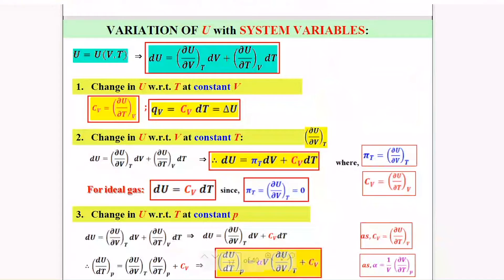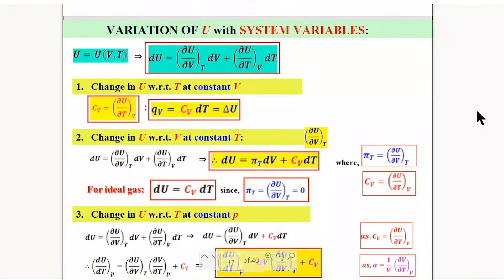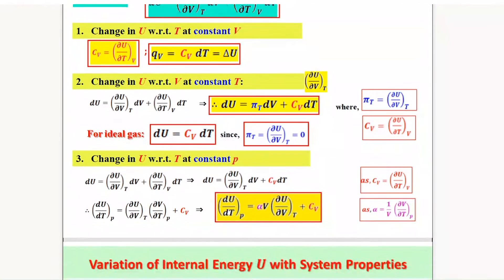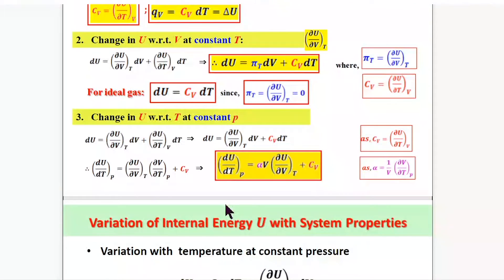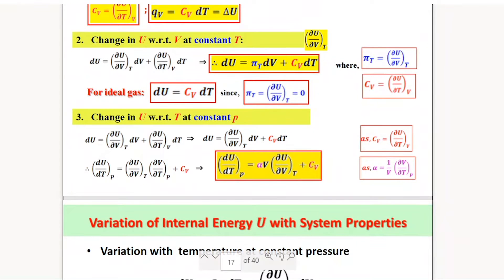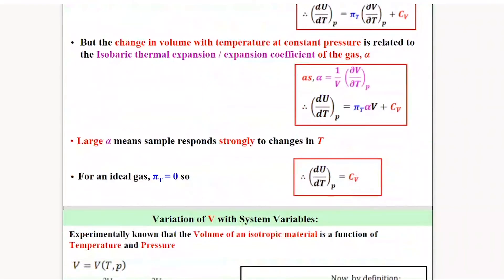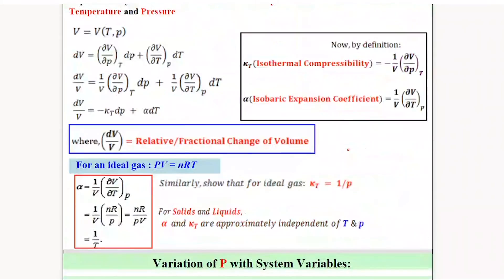Last class we had talked about the variation of internal energy with the system variables. And if you look at the slides which I have not yet uploaded, there was a mistake — I had forgotten to take off this DT in this expression. What we had talked about in the last class was the Joule-Thompson effect.